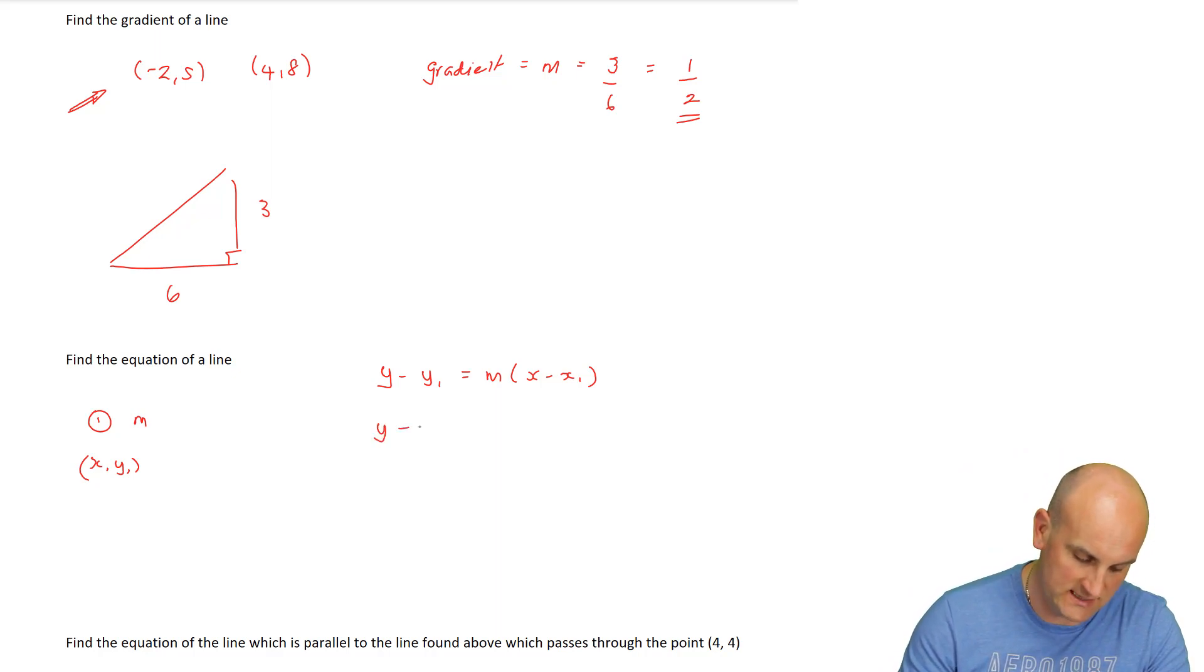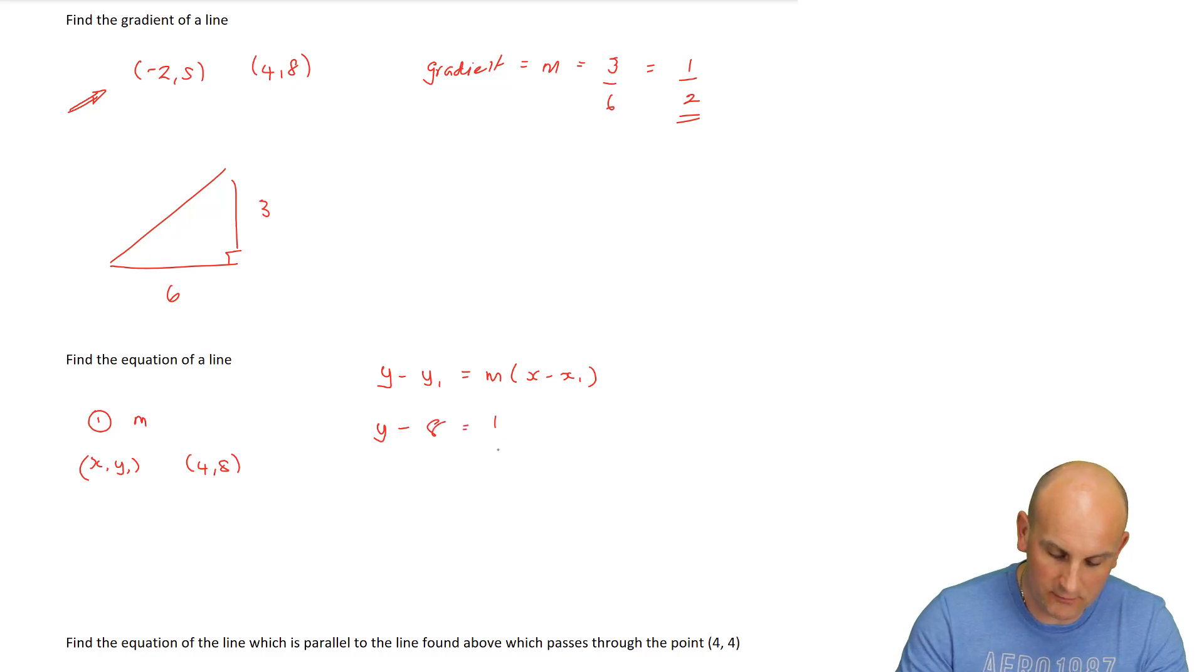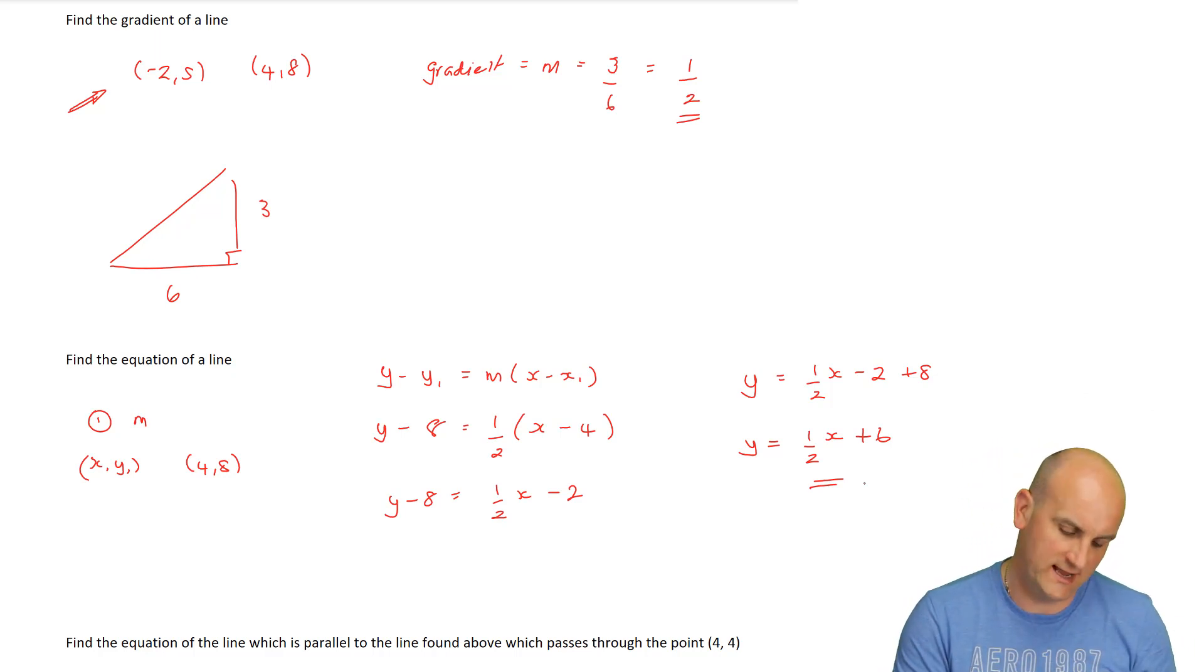So y minus y₁, let's use 4, 8 because it's got no negative signs. The number of people here who put 4 is terrifying. It's the y value, which is 8, is equal to m, the gradient was a half, of x minus x₁, which is 4. We can't leave it that way because an equation of line has to be y equals. So y minus 8 is equal to half x minus 2. Add 8 to both sides. y is equal to a half of x minus 2 plus 8. And there we go. We have my graph as y equals 1 half x plus 6.